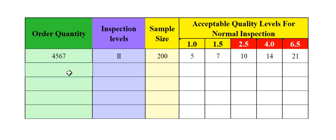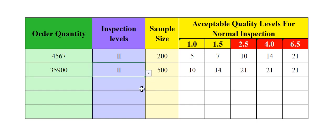And if your order quantity is 35,900 and your AQL level is 2, then the sample size automatically comes to 500. No need to memorize which AQL level — 1, 1.5, 2.5, 4, 6.5 — no need to memorize.